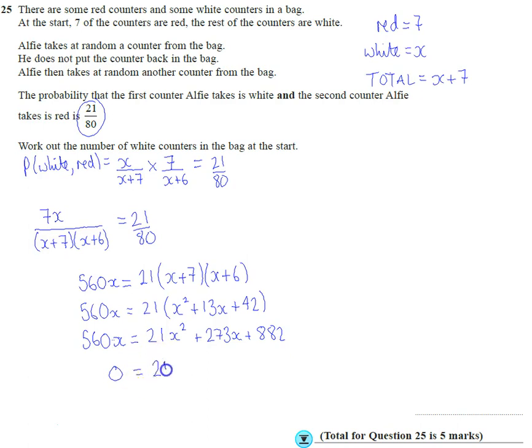So what we've got, we've got 21X squared, take the 560X off this, gives us minus 287X, and then we've got 882.